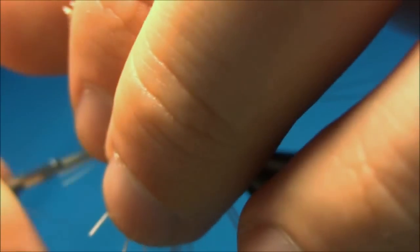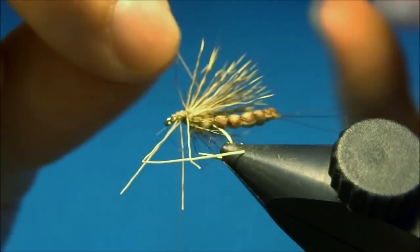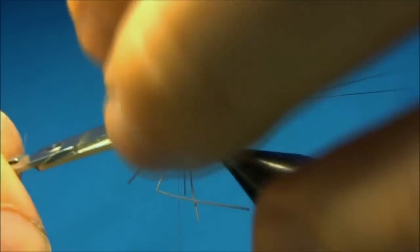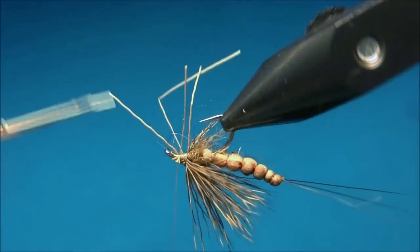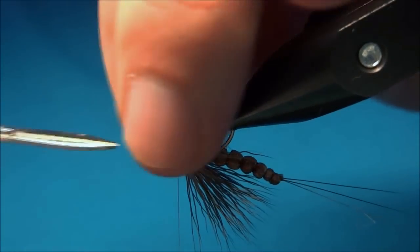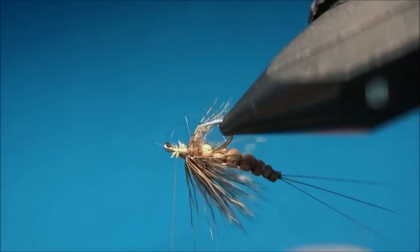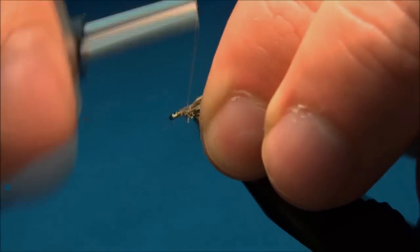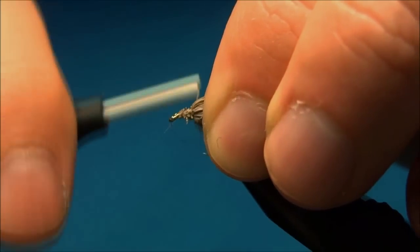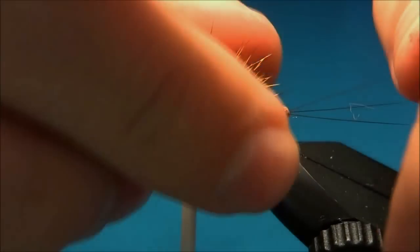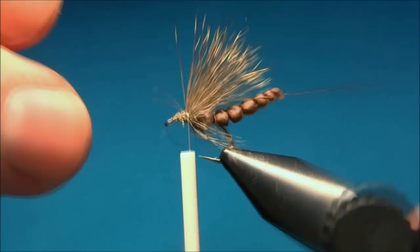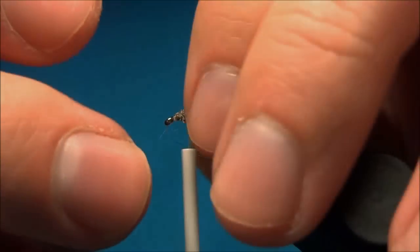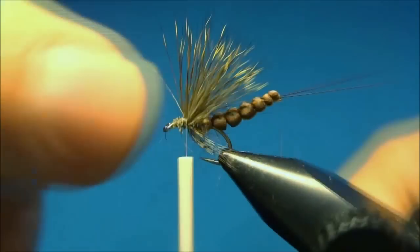And now we can cut off the ends. Try not to cut off the legs or the wing. And now some more turns to tidy up in front. And there we have the wing.